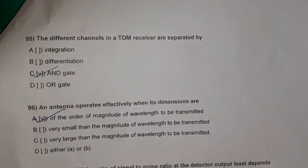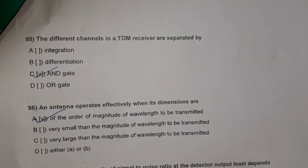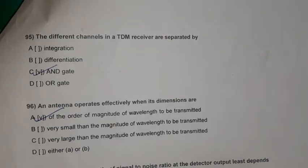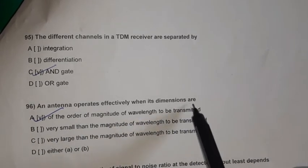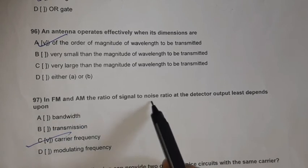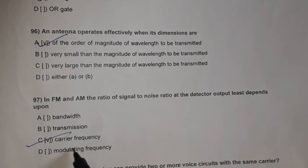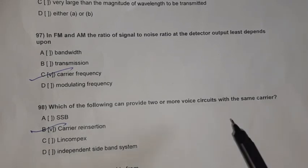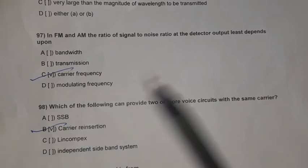Question 95: The different channels in a TDM receiver are separated by an AND gate. Question 96: An antenna operates effectively when its dimensions are of the order of magnitude of the wavelength to be transmitted. Question 97: In FM and AM, the ratio of signal-to-noise ratio at the detector output least depends on carrier frequency. Question 98: Carrier reinsertion can provide two or more voice circuits with the same carrier.